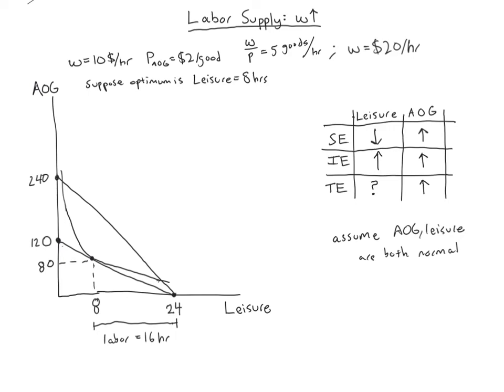That intuition is because we're focusing on the substitution effect — you'd want to substitute more work because it's expensive not to work when you're getting paid hundreds of dollars per hour. But the income effect is that if your wage is really high, maybe you should just not work so much. If you were paid a million dollars per hour, you'd probably just work maybe an hour a day because there's no real point working five hours a day and getting five million dollars when you could buy everything you want with just one hour's work. That's the intuition for why labor supply might actually increase or decrease when the wage goes up.